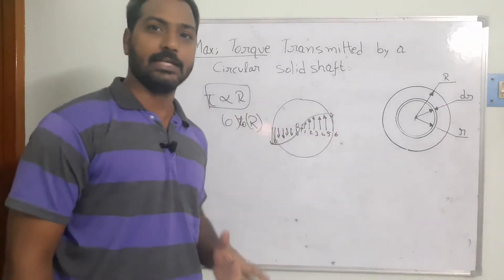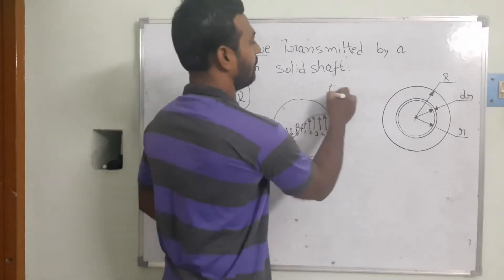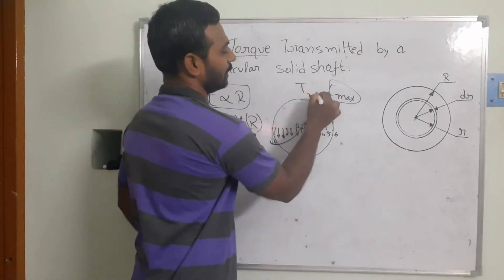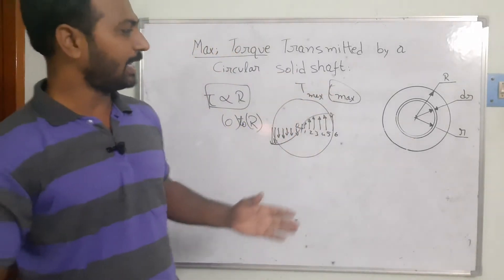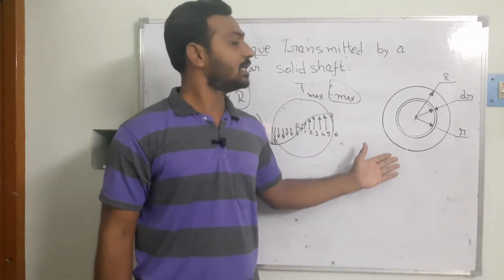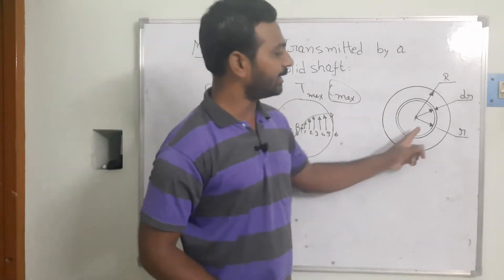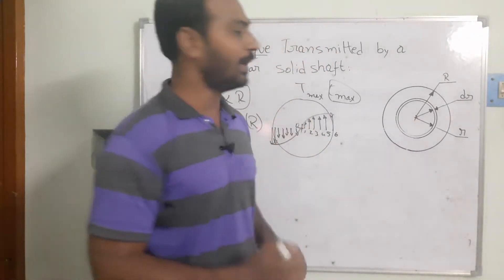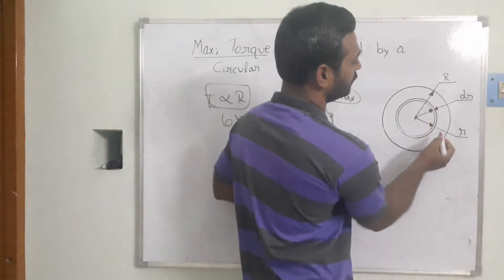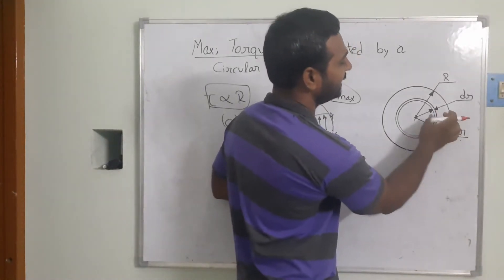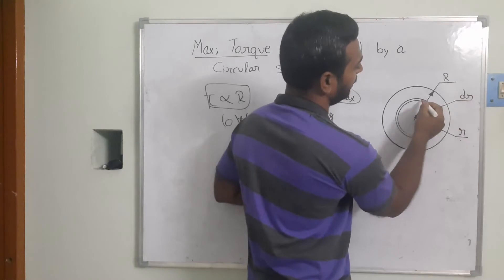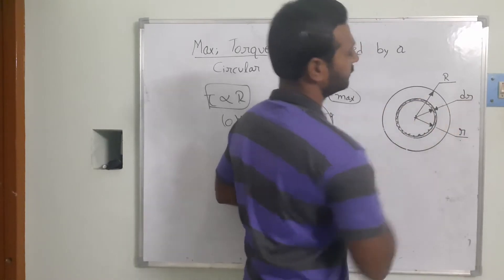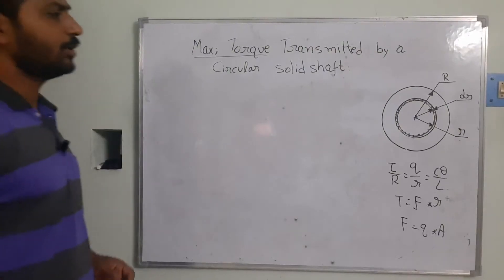It is very clear that if we are able to find out tau max, then we can calculate T max. I have taken one circular shaft and from it I have taken one elemental strip. Capital R is the total radius of the shaft, and I have taken one elemental strip located at a distance r from the center with thickness dr.